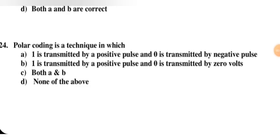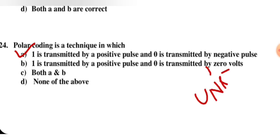Polar coding is a technique in which 1 is transmitted by a positive pulse and 0 is transmitted by a negative pulse — yes, this is correct, so A is correct. The second option where 0 is transmitted by zero voltage describes unipolar coding, not polar. Therefore, option A is correct for this question.